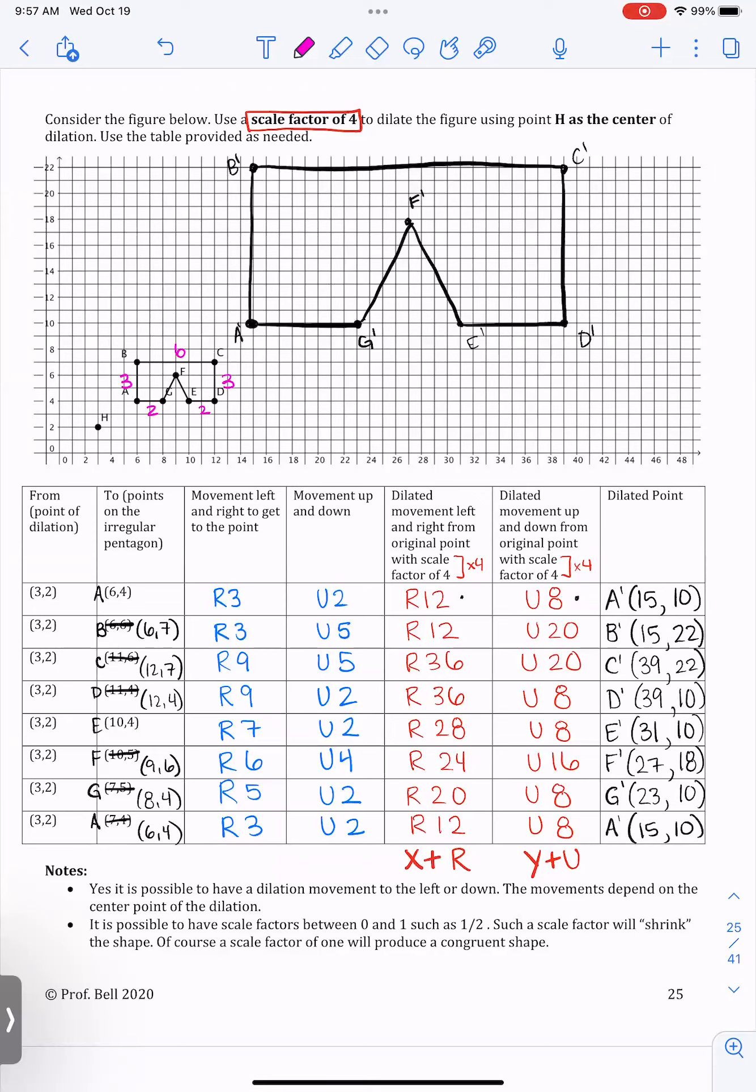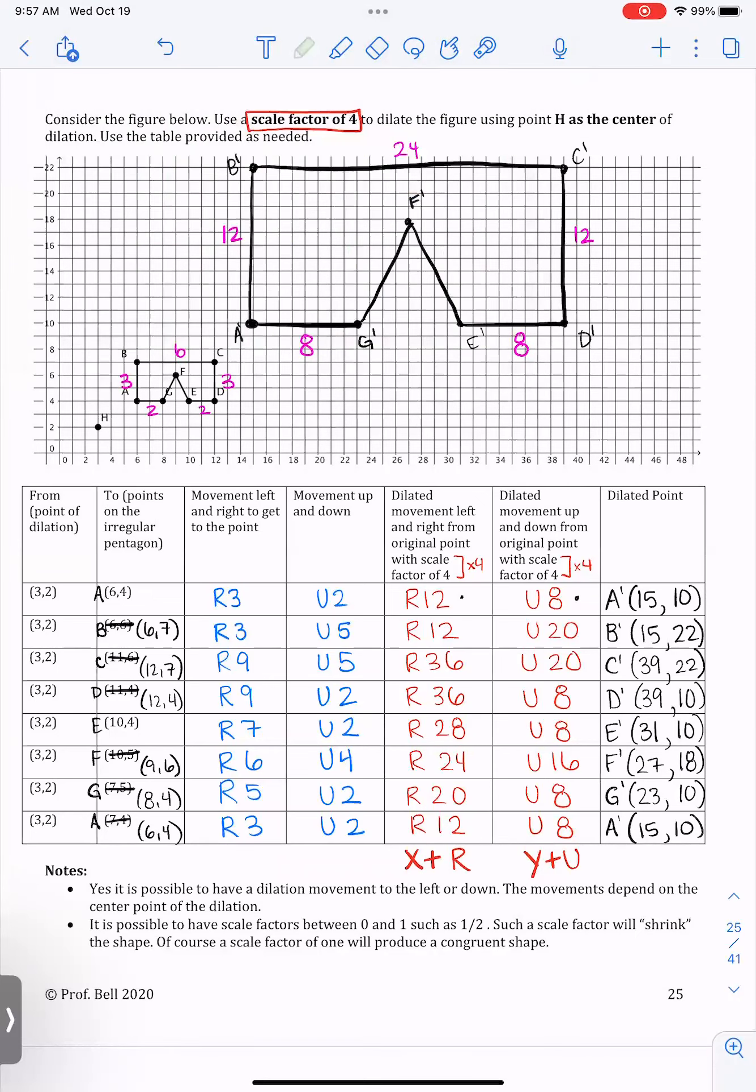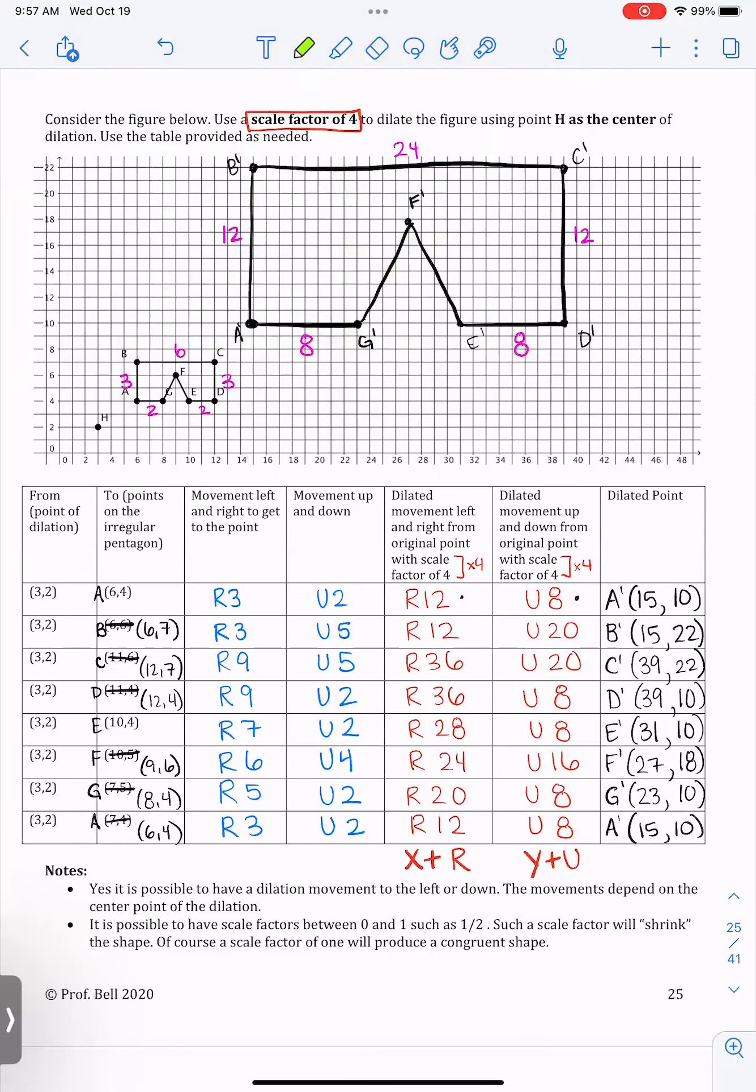So now these sides are 12 units long. These sides are eight units long, and the top of this figure is 24 units long, four times as large as the original image.